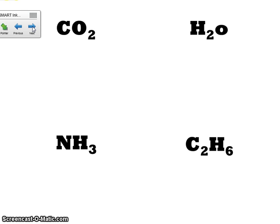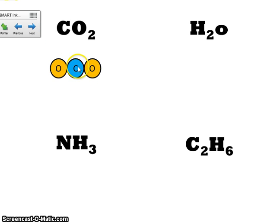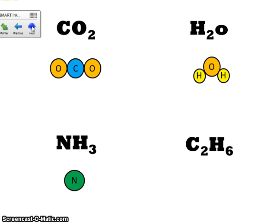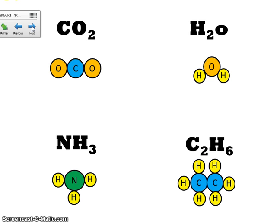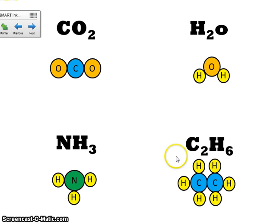Here are some examples for you to draw, and you'll want to add color as well. CO2 means we have one carbon and two oxygens — two oxygen atoms bonded to one carbon. H2O: we have two hydrogens and one oxygen. NH3 should have one nitrogen and three hydrogens bonded to it. And C2H6 should have two C's and six H's bonded to them. Your formula shows you what atoms are present and how many, but the subscripts don't tell you what order they go in.